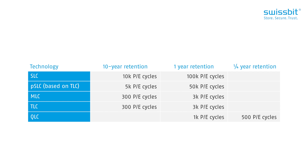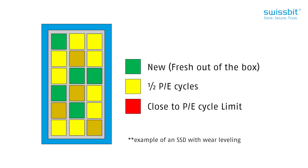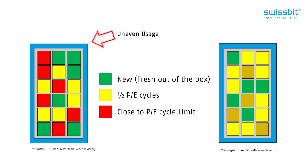Once this limit is reached for any one of the blocks on the flash, data can no longer be stored there reliably. Wear leveling spreads out the wear and tear of these program/erase cycles by monitoring the program count of individual pages. When it notices uneven usage, it moves user data around to even out the program/erase cycle limit and make the storage system last longer.